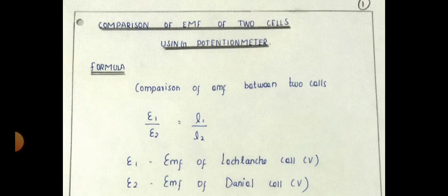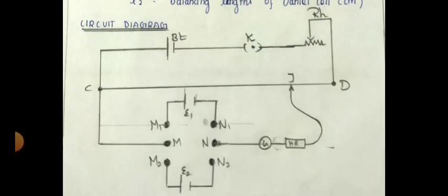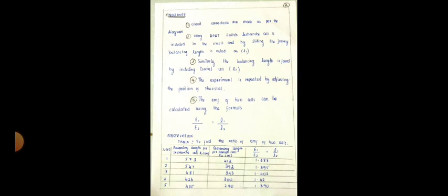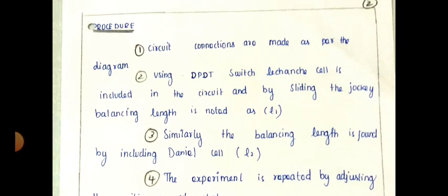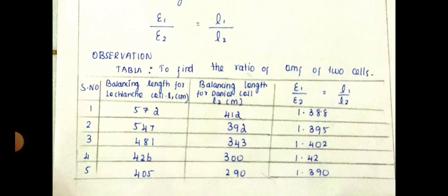Now we move to the next practical: the potentiometer. The formula is e1 by e2 equals l1 by l2. The upper part of the circuit diagram is the primary circuit; the lower part — with M1, M2, DPDT switch, galvanometer, and high resistance — is the secondary circuit. The short procedure has been reduced to five points from the seven given in your book.